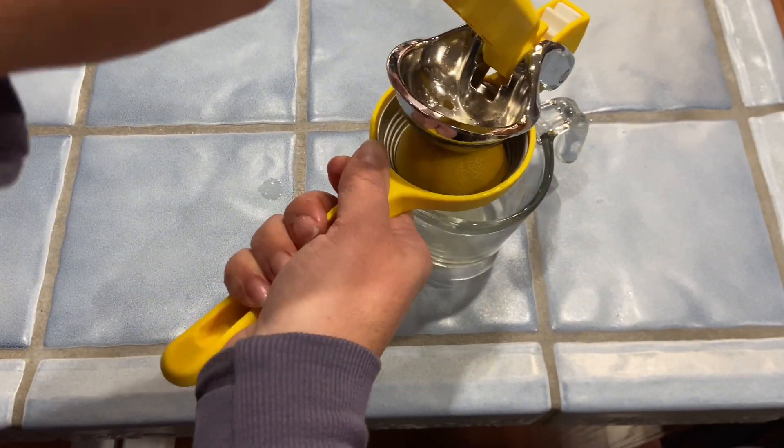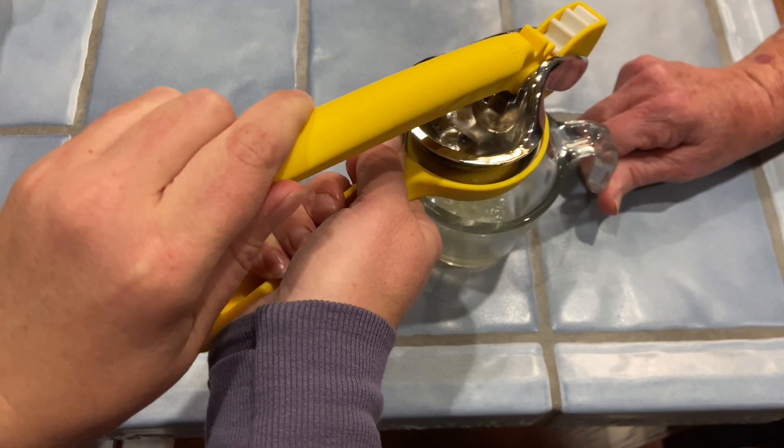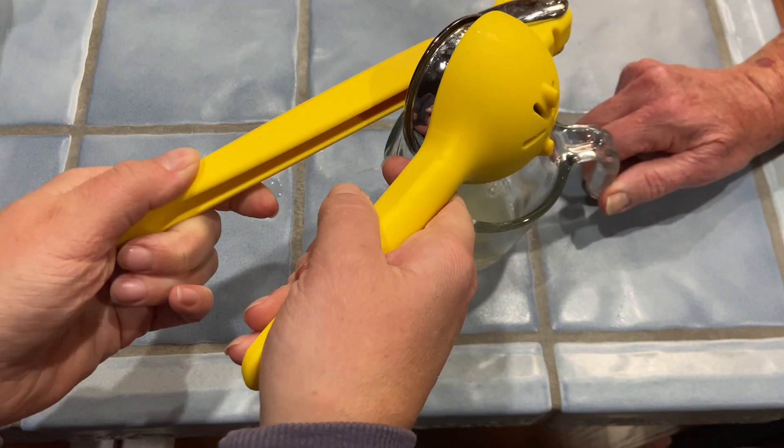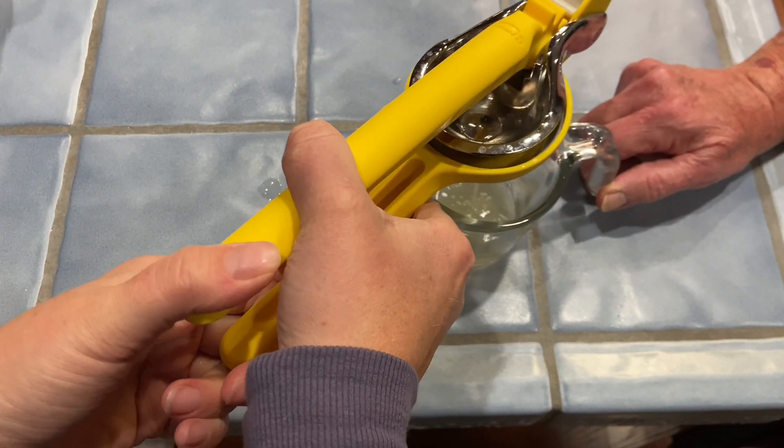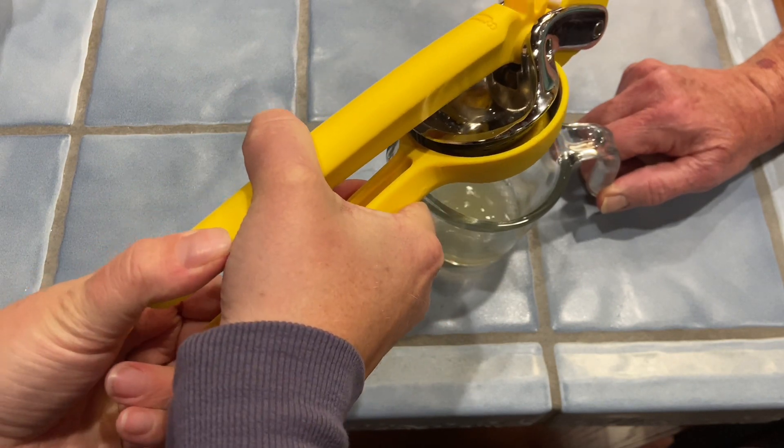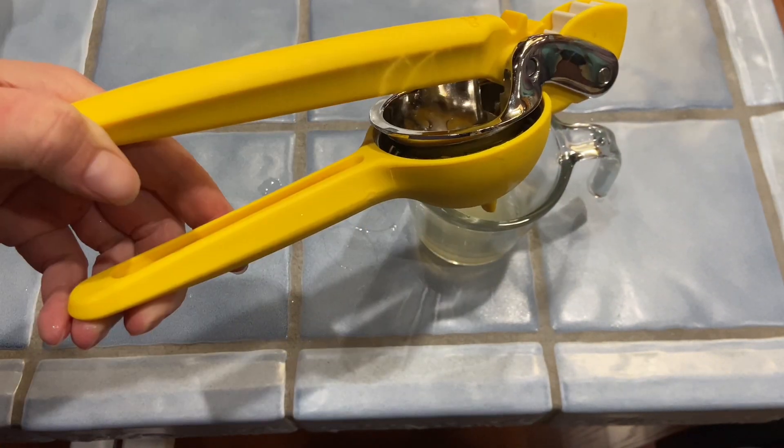So this juicer has the double gear mechanism, which is what makes it so easy to get the juice out of your fruit. You can kind of see the white gear on the top and then it has the center stainless steel part, and so the juice just comes out really easily.